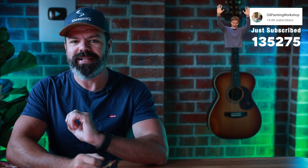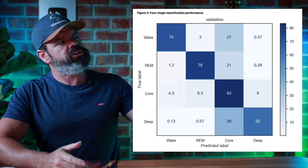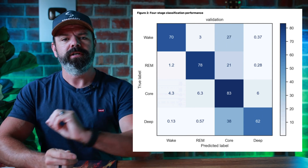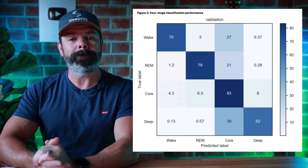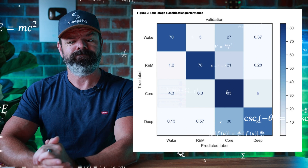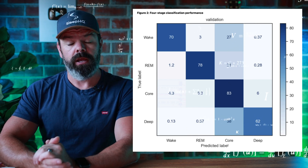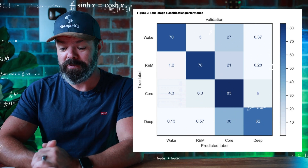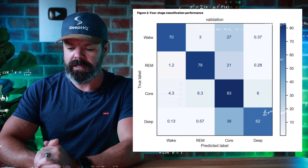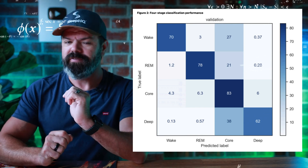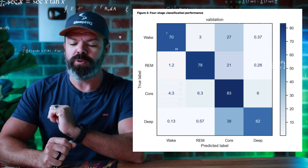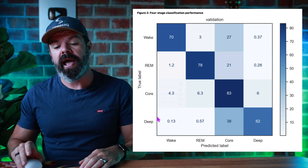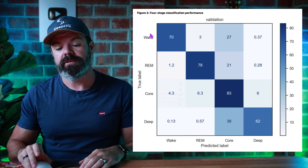But how accurate is it? Let's check it out. This chart here is known as the confusion matrix. I've gone cross-eyed, and obviously whoever invented the confusion matrix has a wicked sense of humor — but lucky enough for us, it's not that confusing. Let me walk you through it.